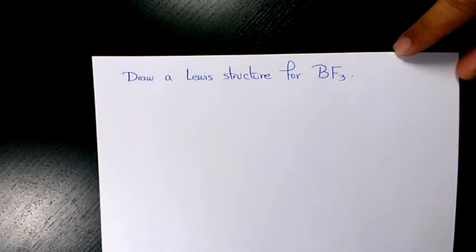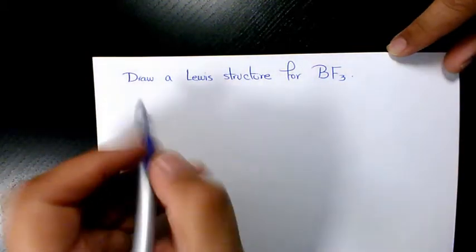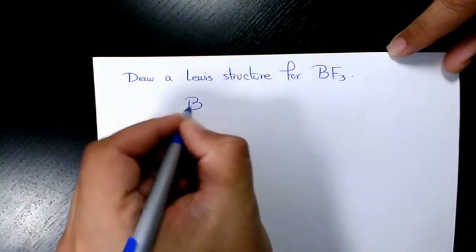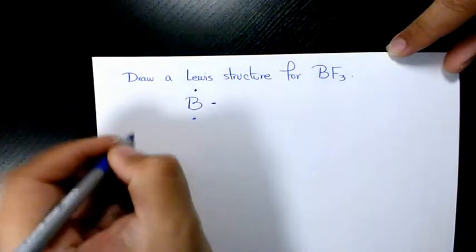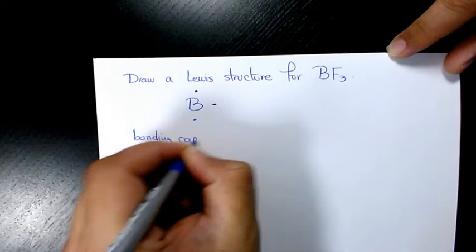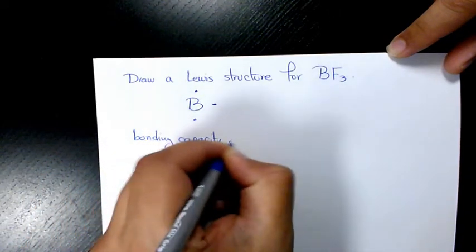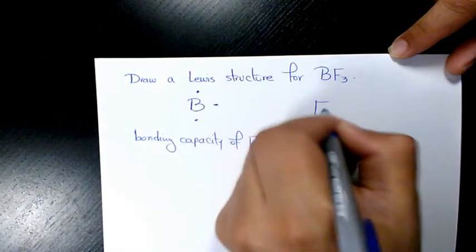So the bonding capacity of B, because it has three valence electrons, is three. The bonding capacity of boron is three, and the bonding capacity of fluorine, it has seven valence electrons.